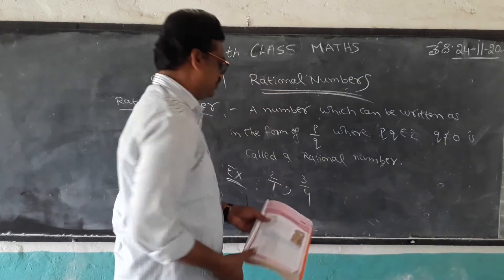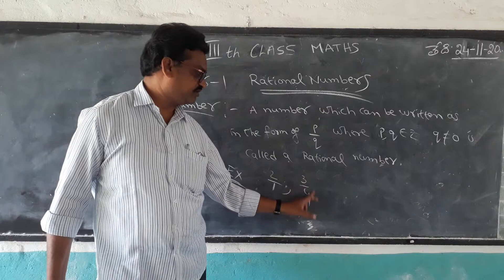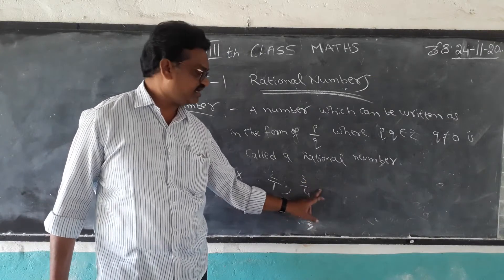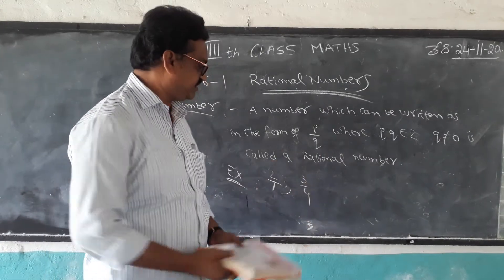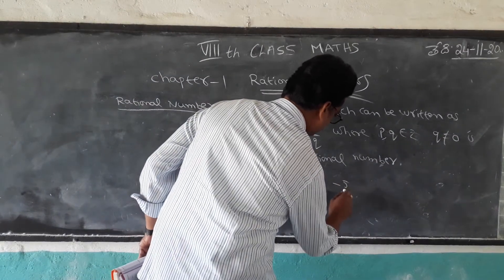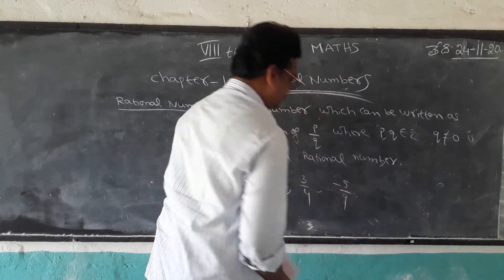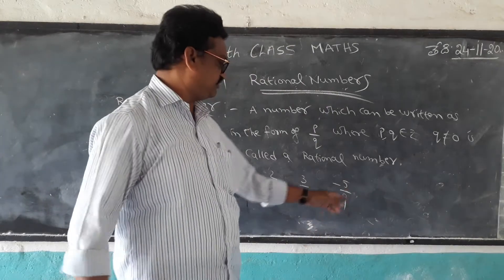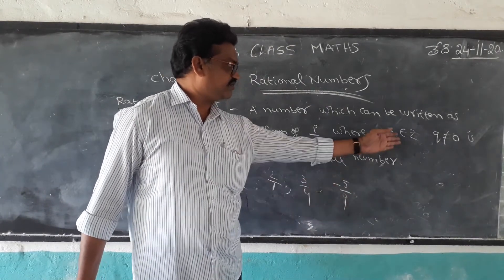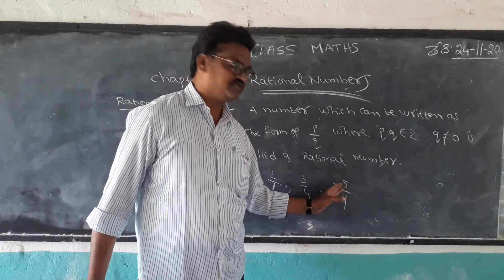Take 3 by 4. 3 by 4 is in the form of P by Q. Therefore, 3 by 4 is also a rational number. Take minus 5 by 9. This is also in the form of P by Q. Minus 5 is an integer, it belongs to Z.